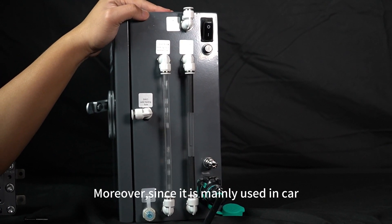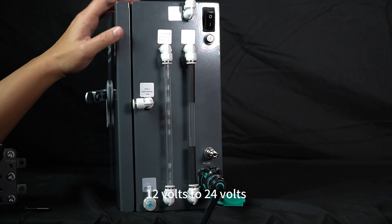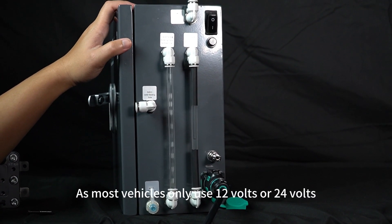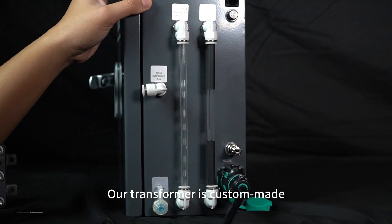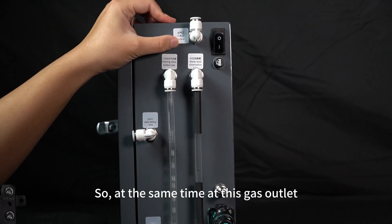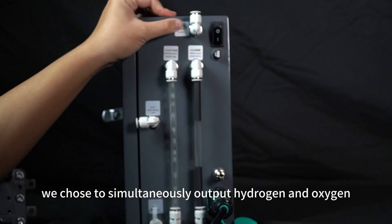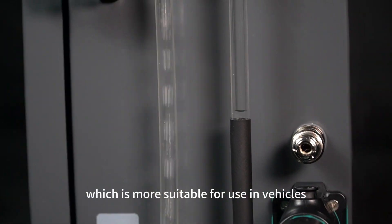Since it is mainly used in cars, this product can operate on 12V to 24V, as most vehicles only use 12V or 24V. Our transformer is custom-made, specifically for automotive use. At the same time, at this gas outlet, we chose to simultaneously output hydrogen and oxygen, which is more suitable for use in vehicles.